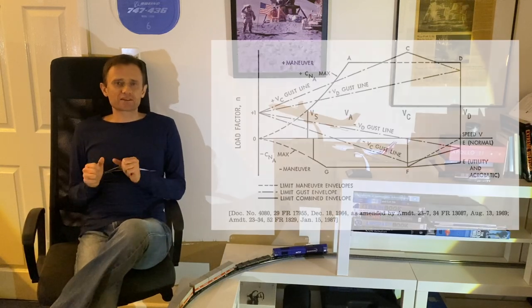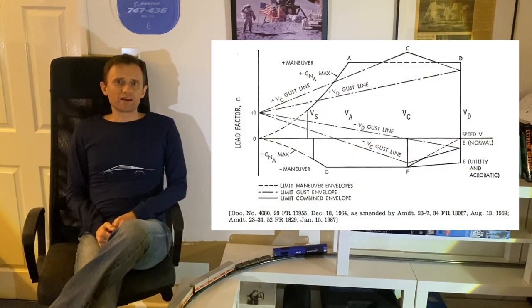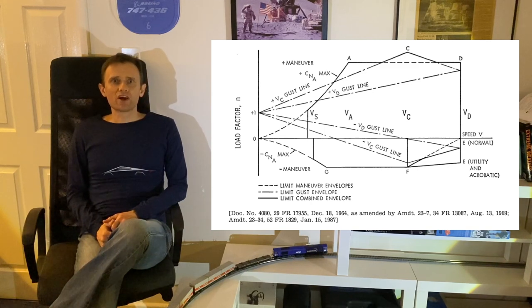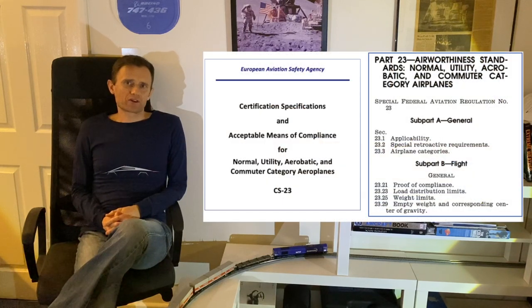The airspeed versus load factor, or VN diagram, is a concise representation of the closed set of boundaries that surround all the loading conditions the aircraft is expected to withstand. The algorithm for drawing up this flight envelope is usually set out by the certification document that defines the initial airworthiness requirements.